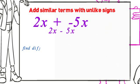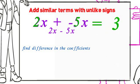First, find the difference to the coefficient. You will subtract 5 minus 2 to get 3. The next thing that you do is to annex the common letters. The common letter here is x. So, you have 3x.